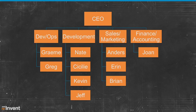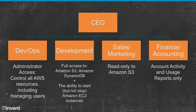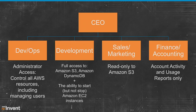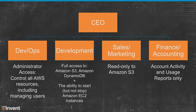Drilling in on these roles: you might want your DevOps-type personnel to have administrator access — able to control all AWS resources including the ability to create new users. In sales and marketing, you might want to give them read-only access to S3 but certainly not have them spinning up EC2 instances. In finance and accounting, you may want to give access to billing information, but you don't want them to have the capability to knock out a production EC2 server. And most finance and accounting folks don't want that capability either — they just want the permissions needed to do their job and nothing more. That's where AWS Identity and Access Management comes into play.